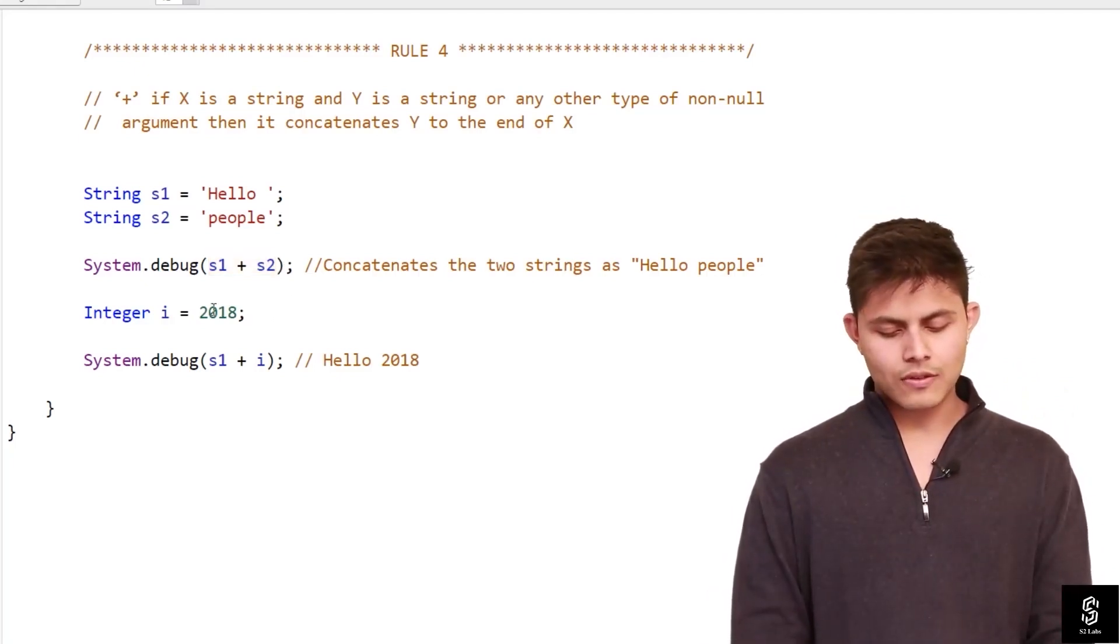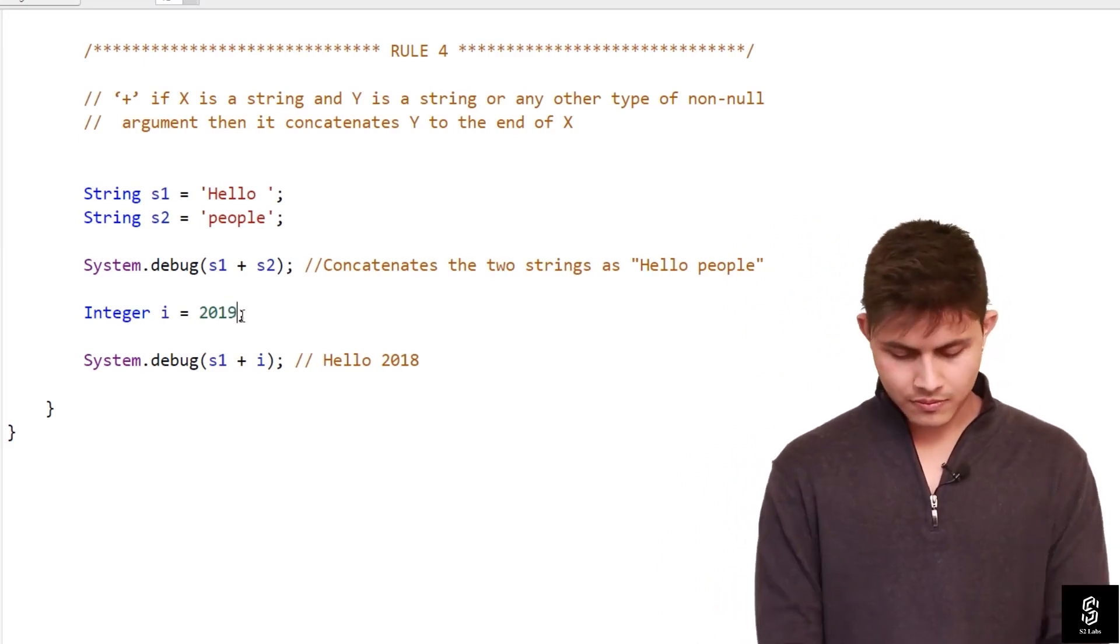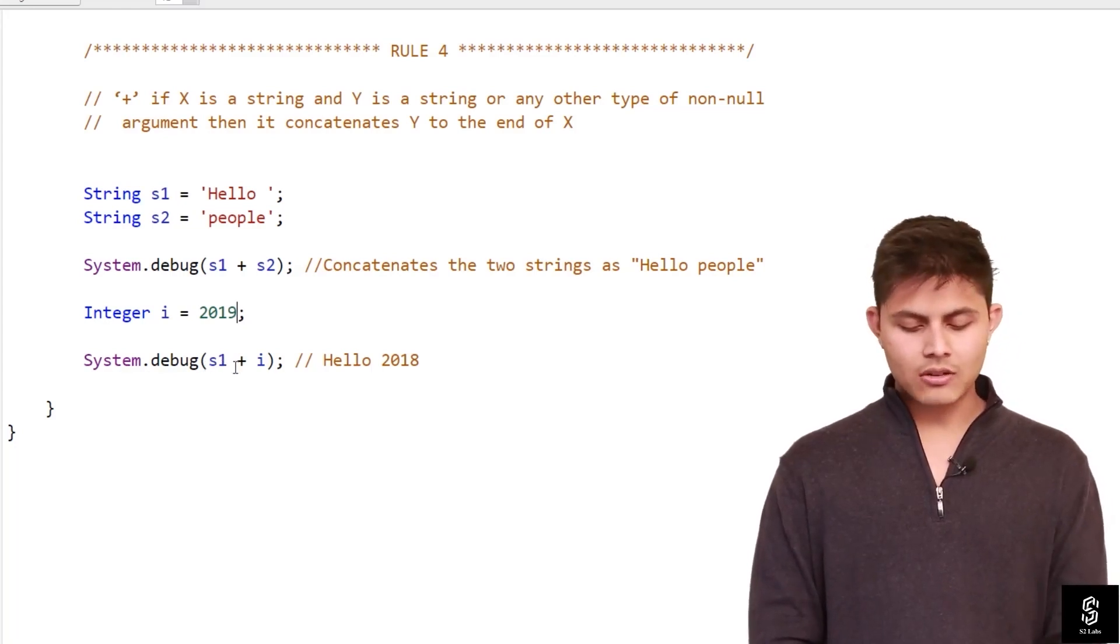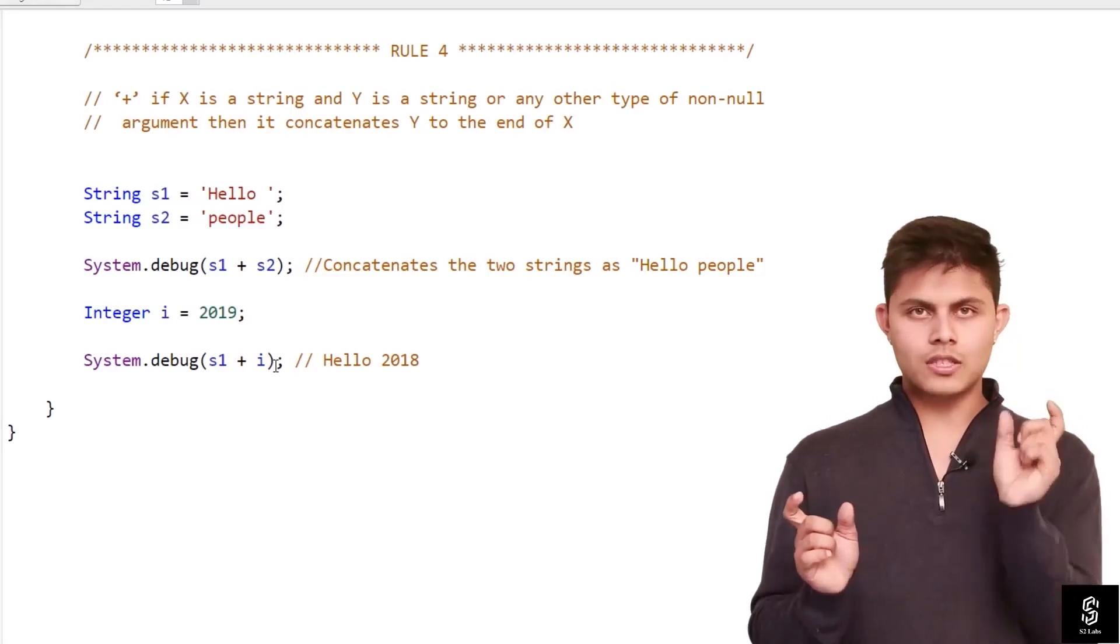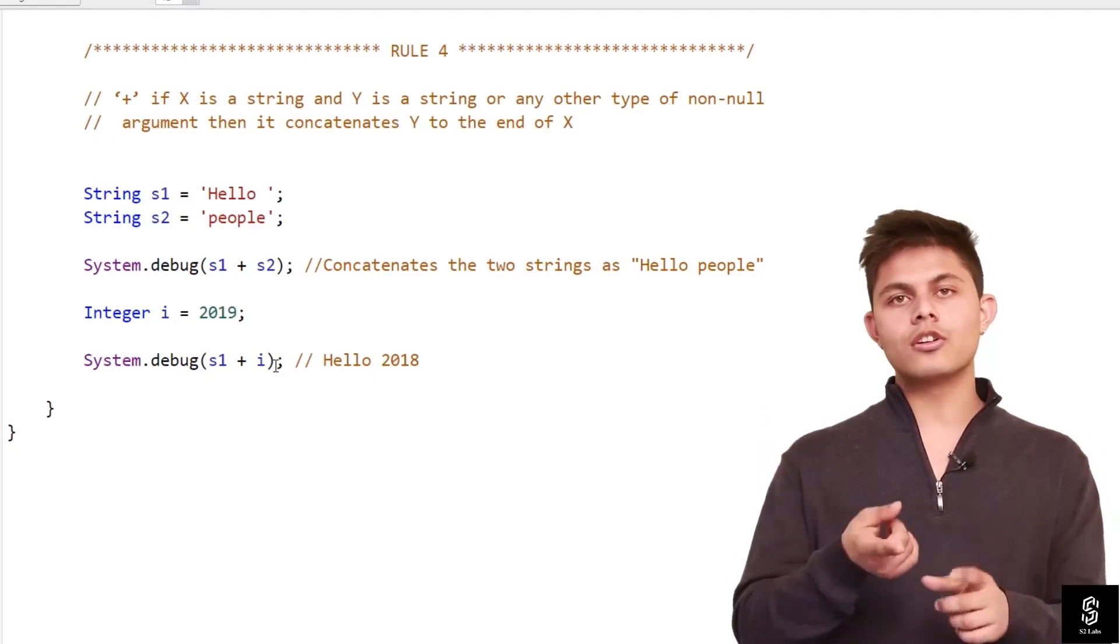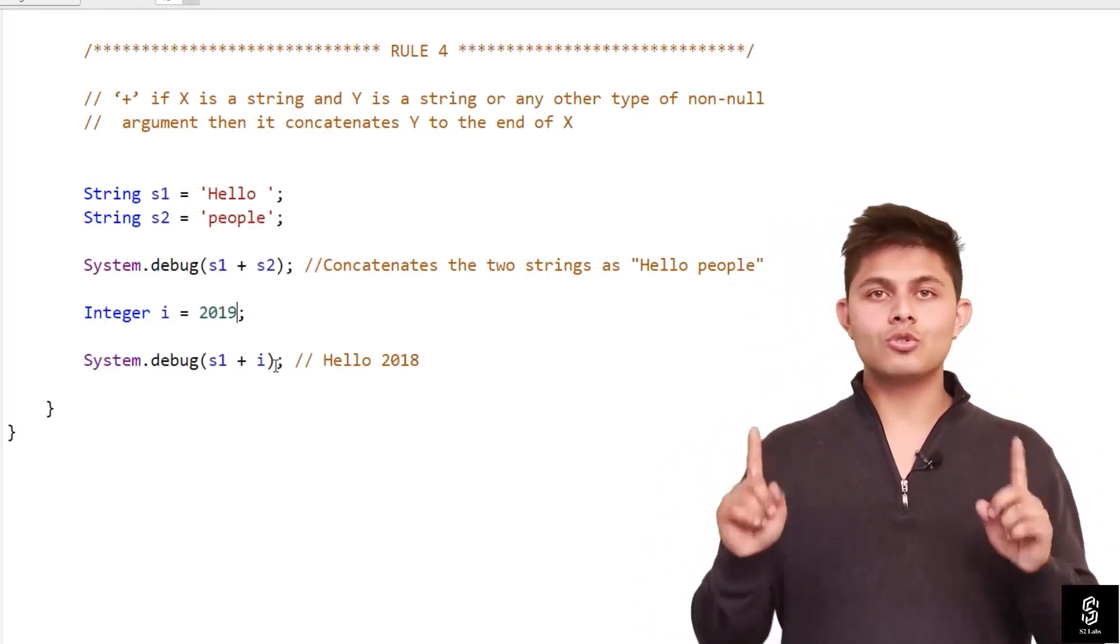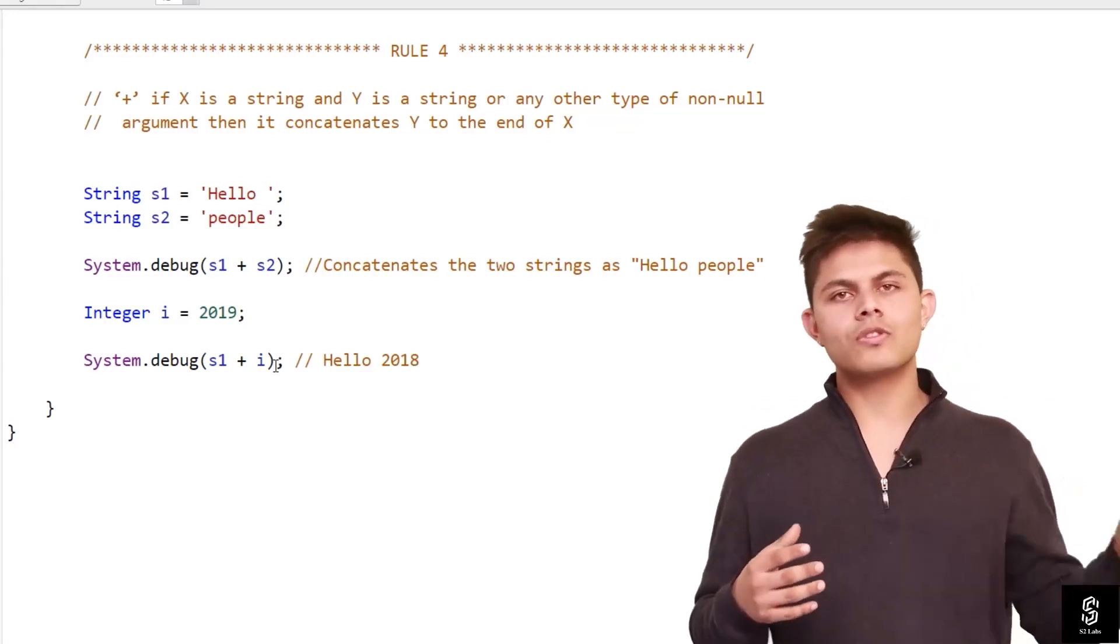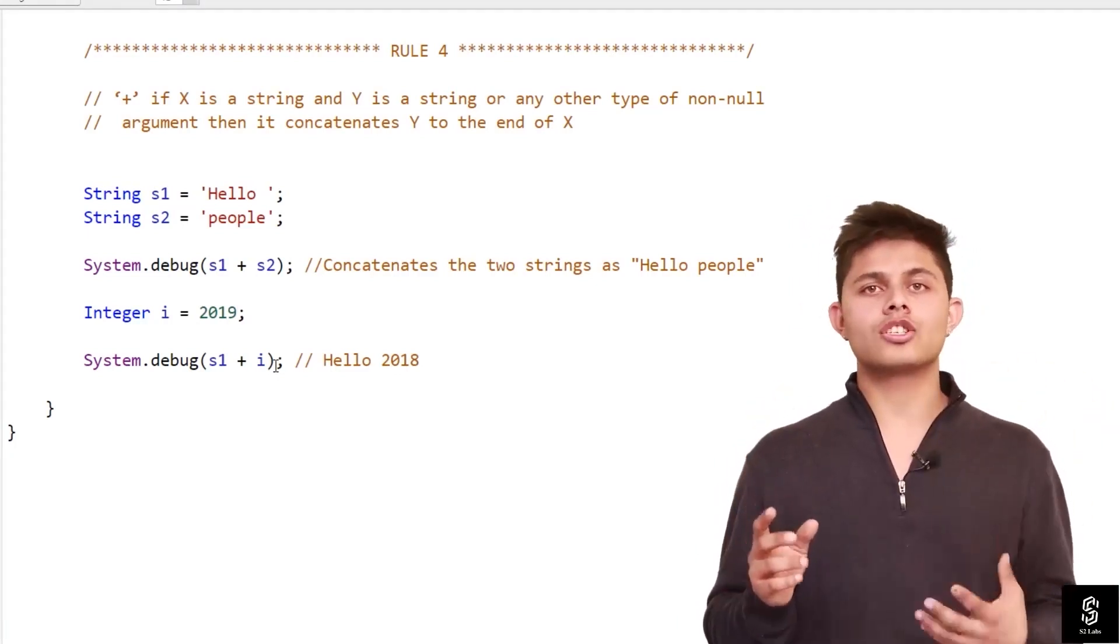Even if we have integer i with value 2019, and in the system.debug I'm writing s1 plus i, it will concatenate hello which is stored in s1 as a string and the integer value we have, and it will return a string. Because as I said, if anyone amongst the two operands is a string, then in that case the output will be a string and the plus operator will act as a concatenation operator.